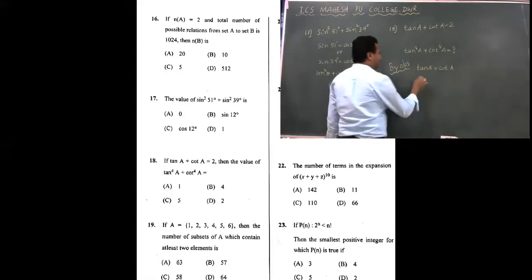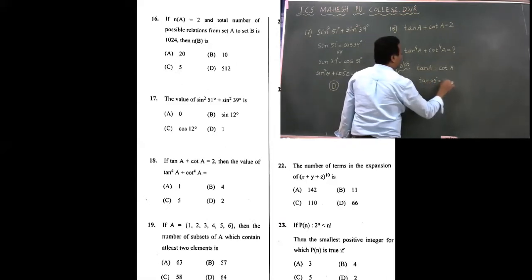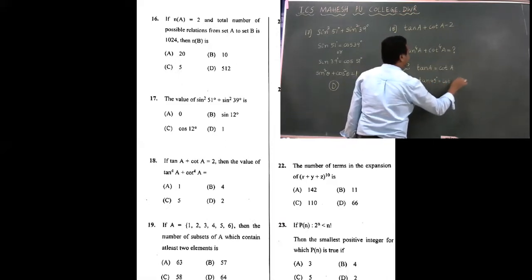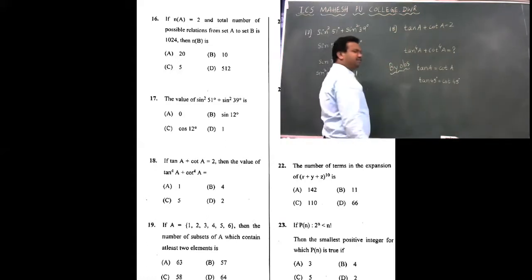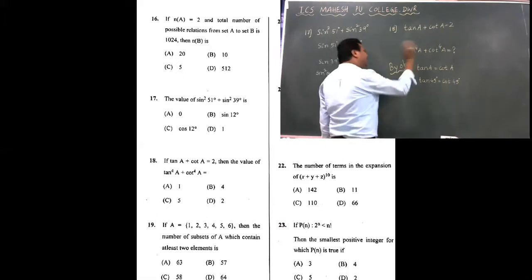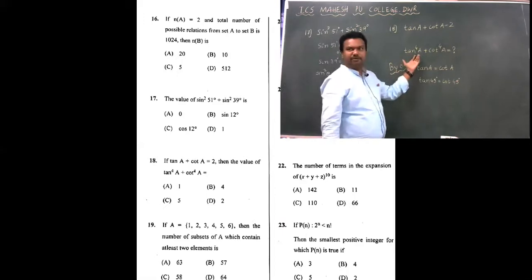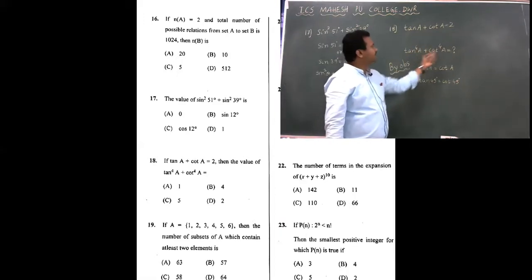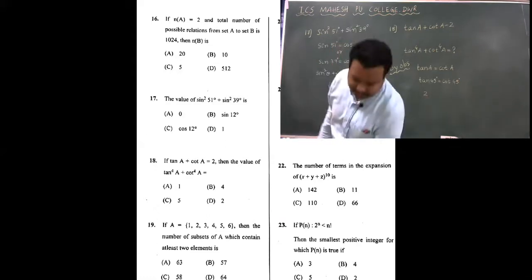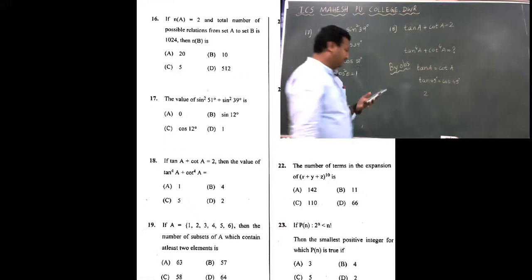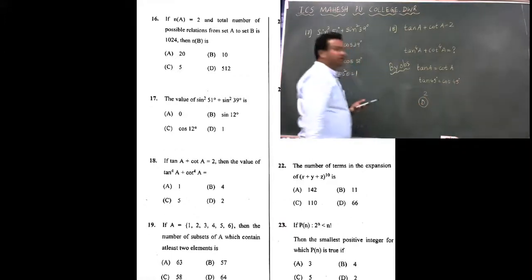Because tan 45 is also 1, cot 45 is also 1. The angle is the same. Therefore, from the observation, it is very much clear that A must be equal to 45 degrees. Now, I think you know the answer for this part. So, 1 raised to 4 plus 1 raised to 4, I think again the answer is 2 here. That is the best way of solving the problem. Here the choice is option D correct.